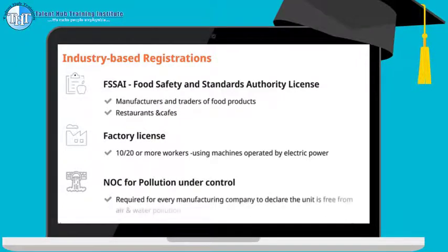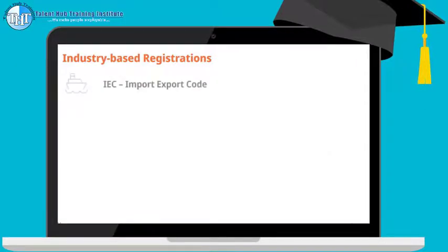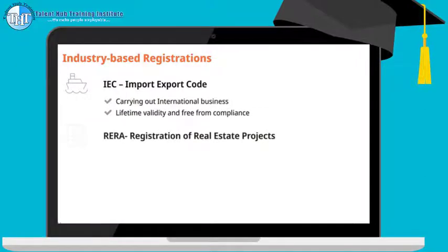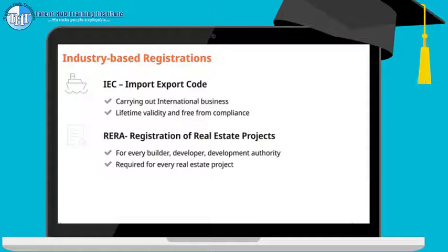NOC for Pollution Under Control: every manufacturing industry must obtain an NOC from the State Pollution Control Board to declare its unit is free from air and water pollution. IEC (Import-Export Code) is required to carry on business internationally. It is an online, one-time registration with lifetime validity and has no post-compliance requirements. RERA (Registration of Real Estate Projects) is mandatory for every builder, developer, and development authority carrying on real estate projects, including construction or development of buildings, converting existing buildings into apartments, or development of land.